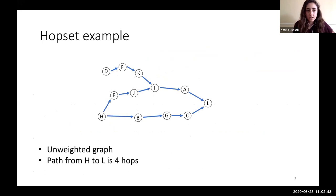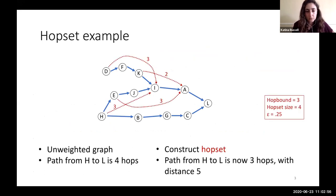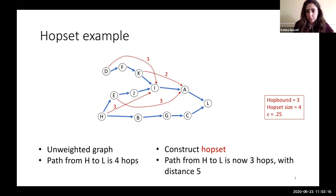We consider H to be the hop bound — the limit on the number of hops on path P — and the size of the hop set is the number of edges added. In this example we've added two edges shown in red, so the size is two and the hop bound is three, because you can get from any node to any other node in three hops while still preserving the distance. Now for an inexact hopset example: in an unweighted graph, the path from H to L is four hops. After constructing the hopset with weighted edges shown in red, the path from H to L is three hops going H→I→A→L, but the distance increases to five — that's where the distance approximation comes in. The hop bound is three and the hop set size is four.